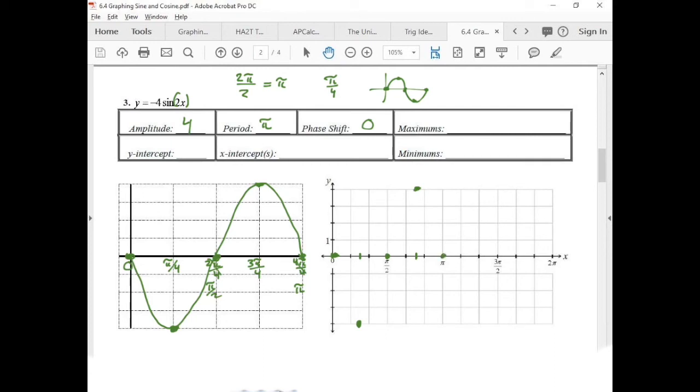And then we go down to π. If I connect the dots, it would look like this. But we're supposed to go all the way to 2π. But now we can see the pattern.